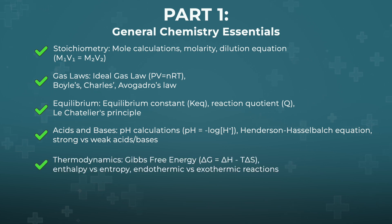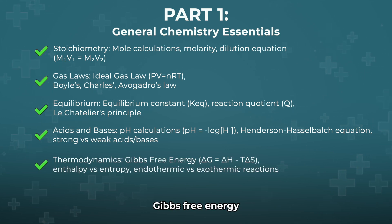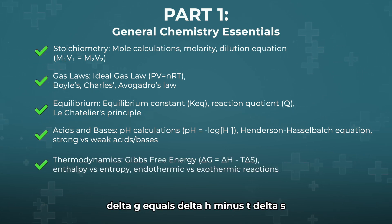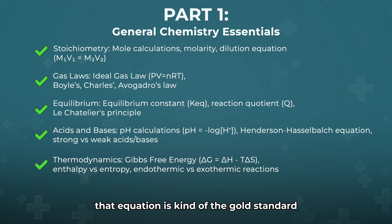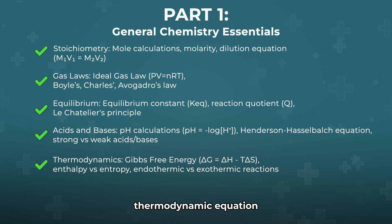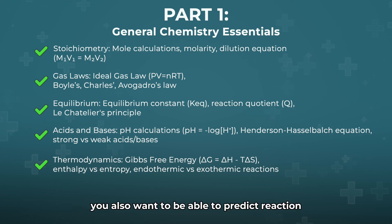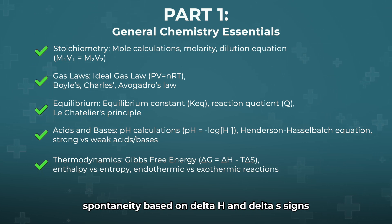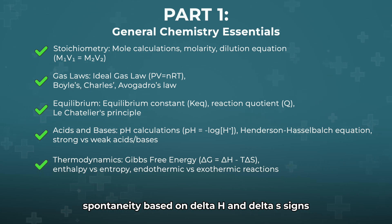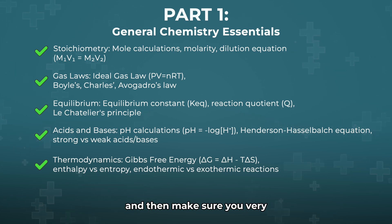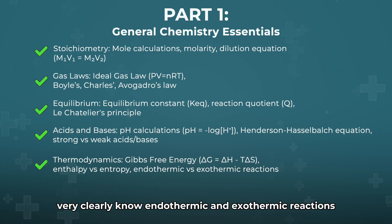Finally, we've got thermodynamics. Gibbs free energy — delta G equals delta H minus T times delta S — is kind of the gold standard thermodynamic equation. You also want to be able to predict reaction spontaneity based on the signs of delta H and delta S, and make sure you very clearly know endothermic and exothermic reactions.